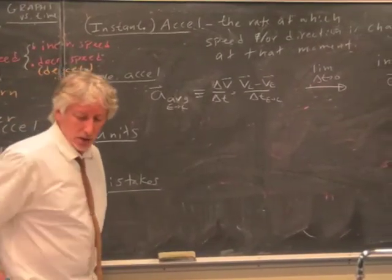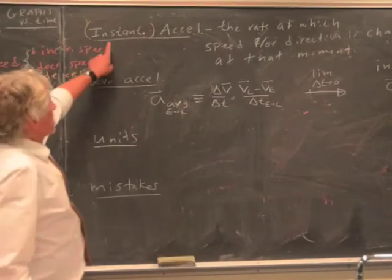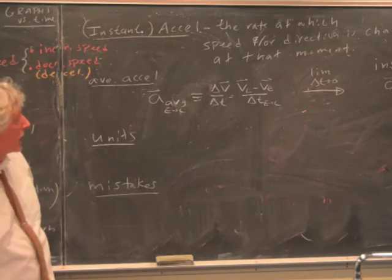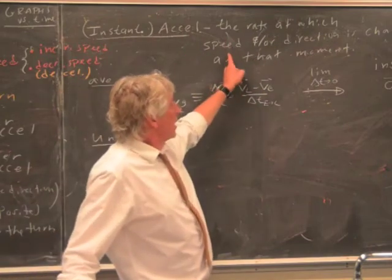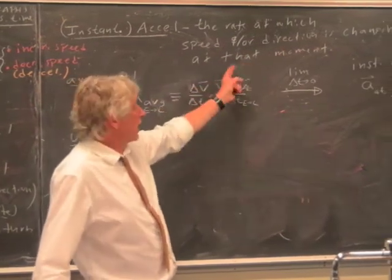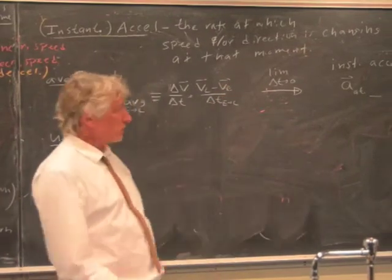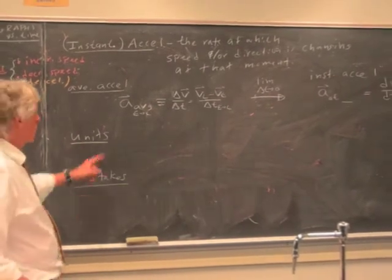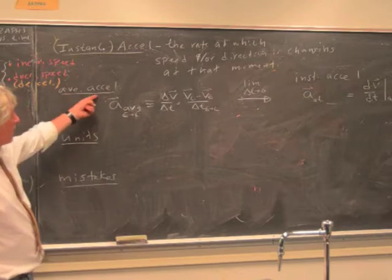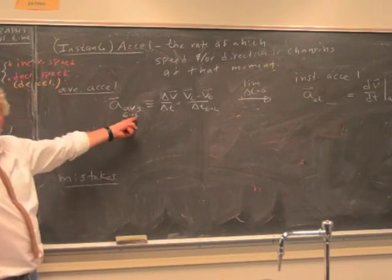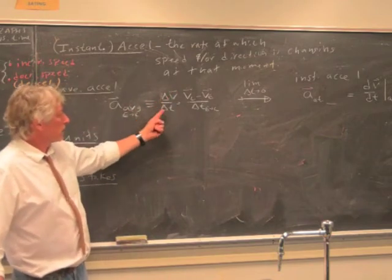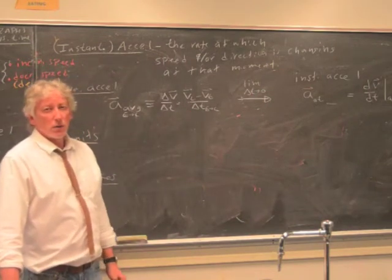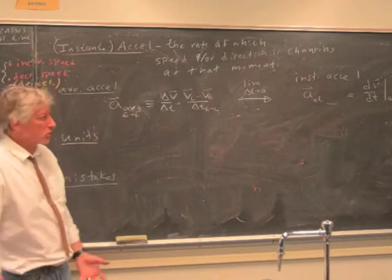So conceptually — the instantaneous acceleration, the acceleration at any instant, any moment, any state, is the rate at which the speed and/or direction is changing at that moment. The average acceleration between any two states would be the overall change of velocity over the time — the change of velocity from later to earlier over the time. In one dimension it's easier than in two dimensions with vectors.